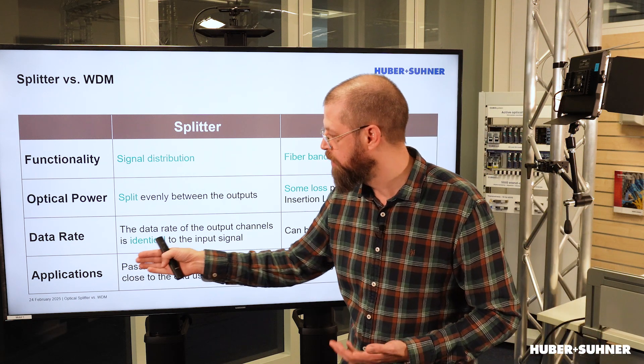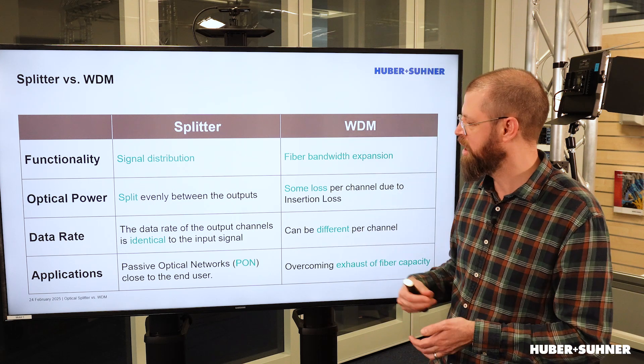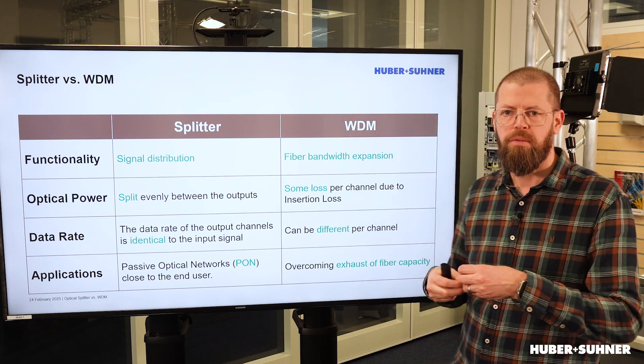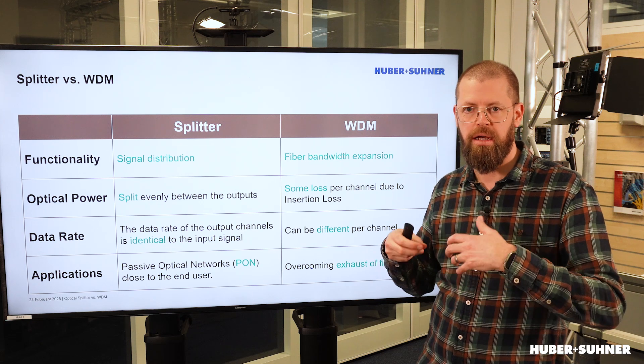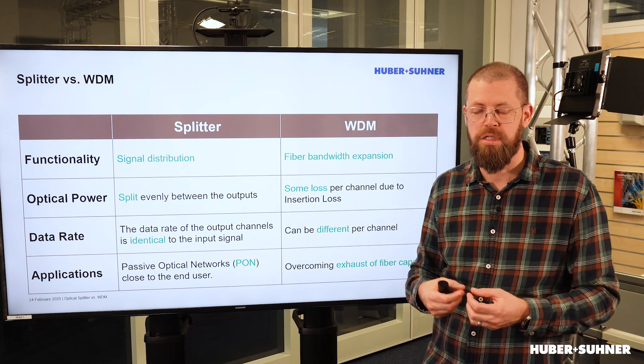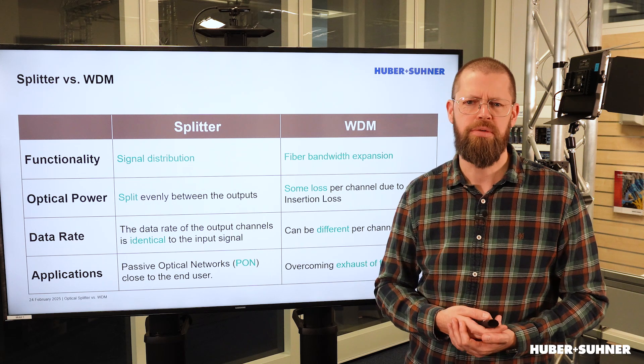And from an application point of view, well, the splitters are used more in the PON networks, close to the end user, and WDM, well, that is basically everywhere where you want to overcome the fiber capacity exhaust, where fiber is already deployed and deploying new fiber isn't really an option.